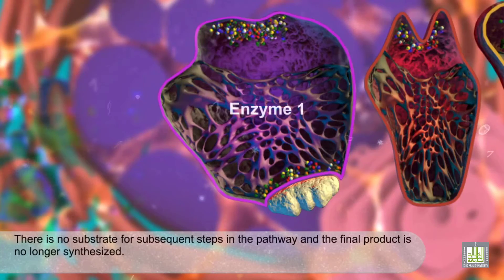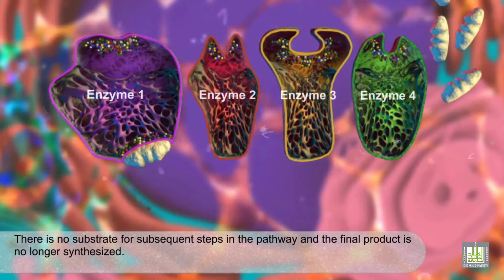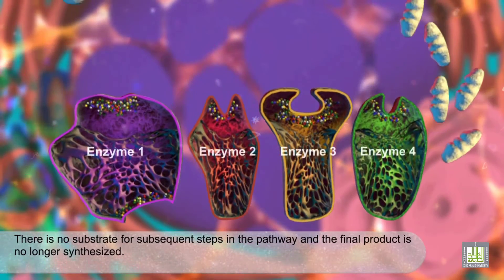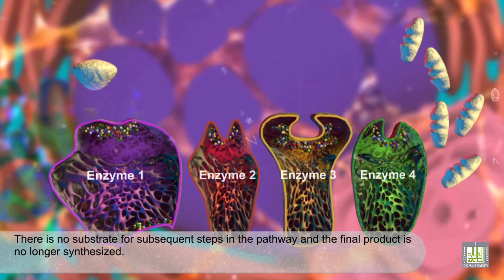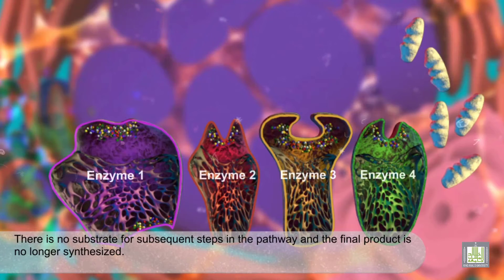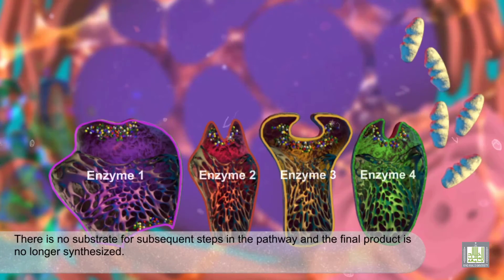When the product binds to the allosteric site, the enzyme undergoes a conformational change and can no longer react with its substrate. There is no substrate for subsequent steps in the pathway, and the final product is no longer synthesized.